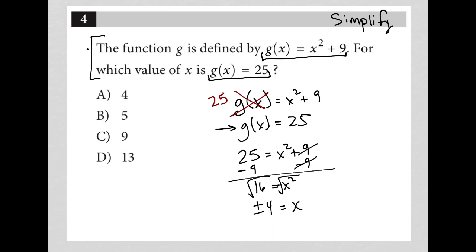Now, the question actually says the function G is defined by G of x equals x squared plus 9. For which value of x is G of x equal to 25? So, I've already done that work. X can be plus or minus 4. We are provided the positive 4 option here, so therefore our answer is choice A.